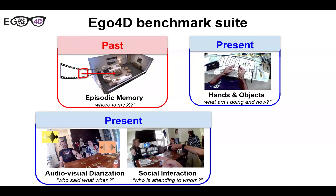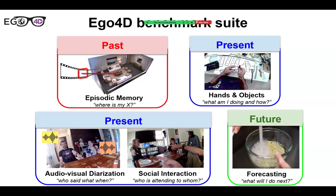The other part of the present deals with social and multimodal aspects with audio — two tasks: audiovisual diarization, being able to transcribe everything said in the video (upping the challenge because people talk over each other and speak in informal conversational terms); and social interaction, predicting from the ego video who is paying attention to the camera wearer. Then, moving into the future, the forecasting task is about predicting, given the video observed so far, what are the next likely actions and active objects in the scene.